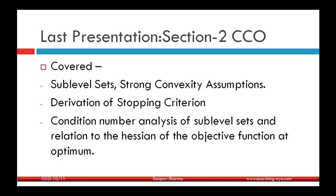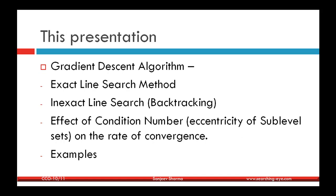For all that material, you can refer back to the first presentation. This presentation will focus on gradient descent algorithms and exact line search methods, including the backtracking algorithm and the effect of condition number or eccentricity of the sub-level sets on the rate of convergence. The convergence analysis here will only include a practical example showing that as eccentricity increases, the rate of convergence decreases.